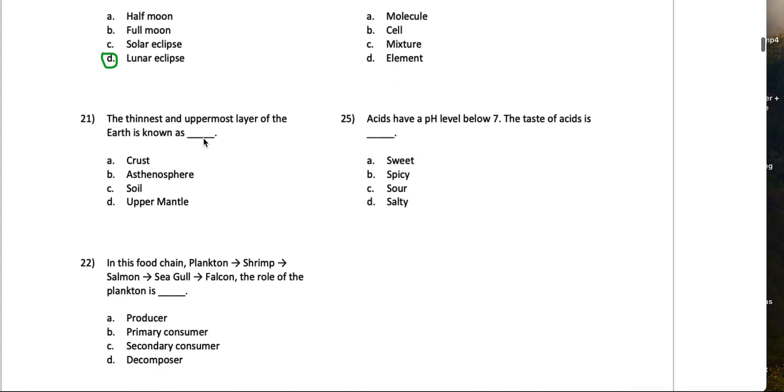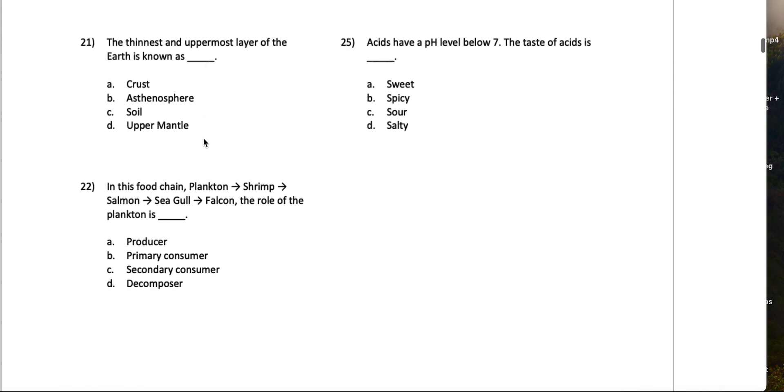20, when the moon moves into the Earth's shadow, a blank occurs. So the moon moves into the Earth's shadow, so it'll be covered by the shadow, right? It'll be the moon that's really going to be eclipsed, so I'd say it'll be a lunar eclipse.